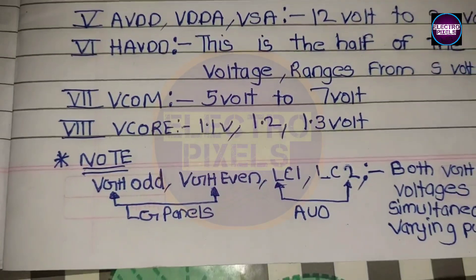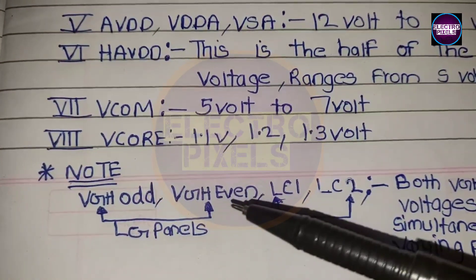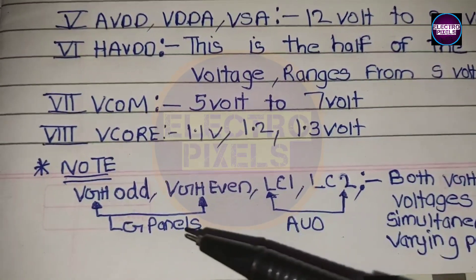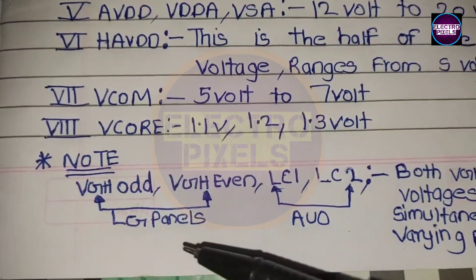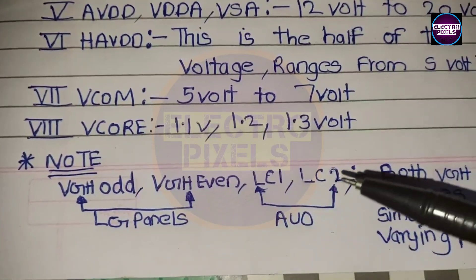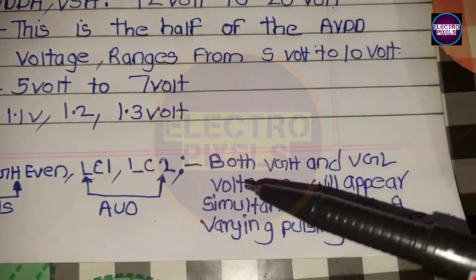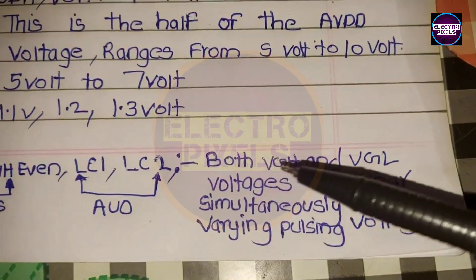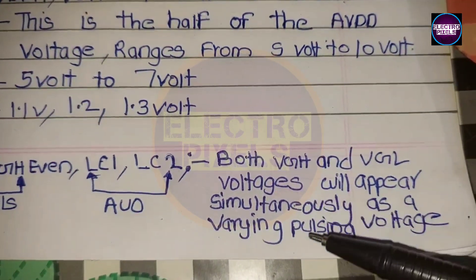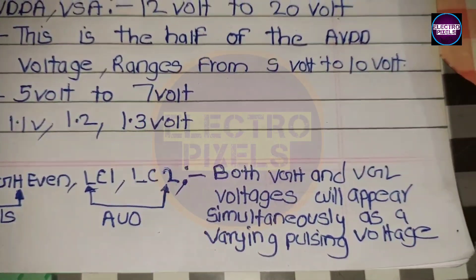Finally, the last one is the VGH odd and VGH even, and LC1-LC2 test points used in LG panels and AUO panels respectively. In these test points, both VGH and VGL voltages will appear simultaneously as pulsing voltages.